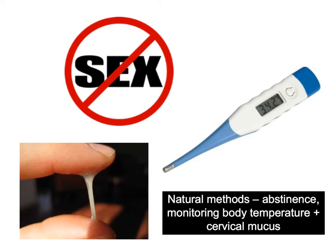Finally, this category is a bit more unusual and one people think about less — it's called the natural or rhythm method. There are three things we can focus on: abstinence, monitoring body temperature, and cervical mucus. Abstinence is simply avoiding sex completely, or just avoiding sex when the egg is likely to be in the oviducts — that's known as the fertile period. This would only work if menstrual cycles are regular and predictable, so it's quite an unsafe method, but useful if couples don't wish to use any other method of contraception.